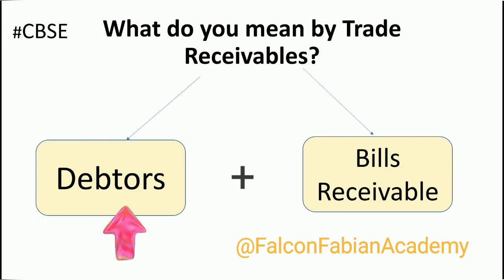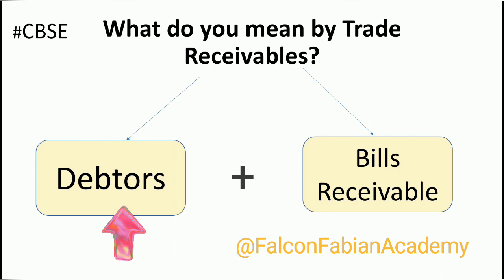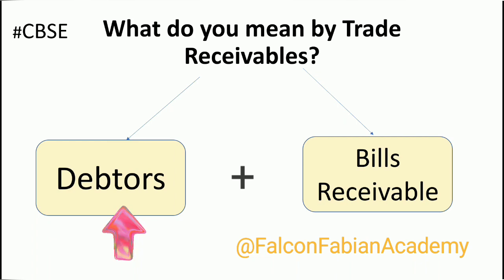Let's take another example. There's a manufacturer and a retailer — the retailer buys on credit from the manufacturer, so the retailer becomes a debtor for the manufacturer. So a debtor is a firm, a person, or an entity to whom goods and services are sold on credit.